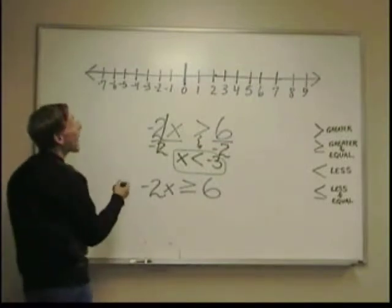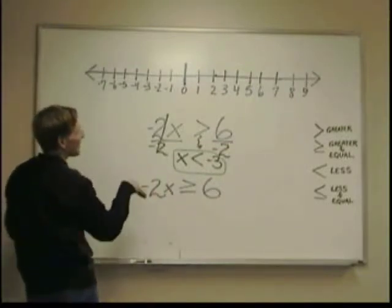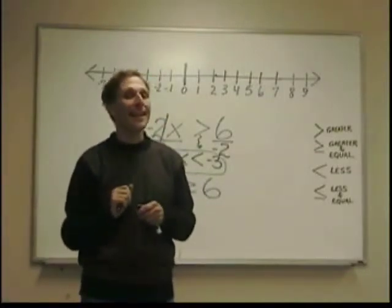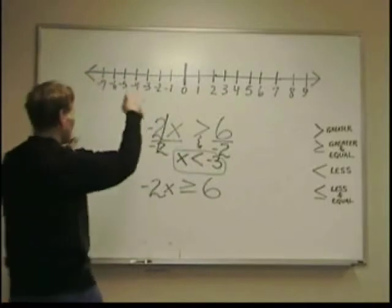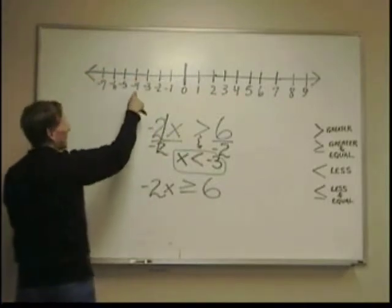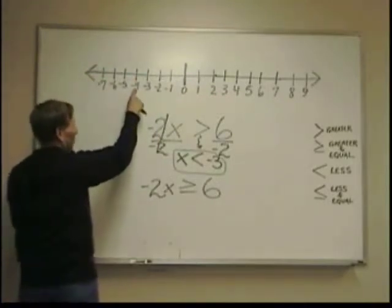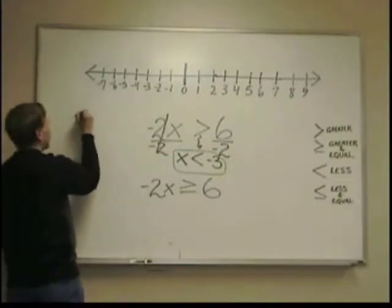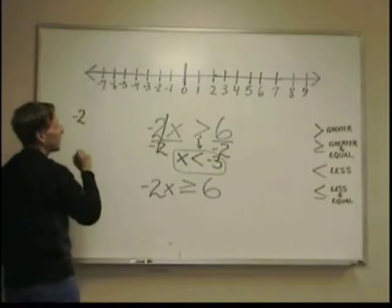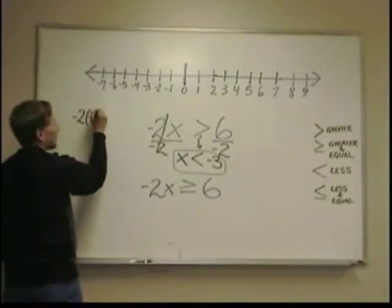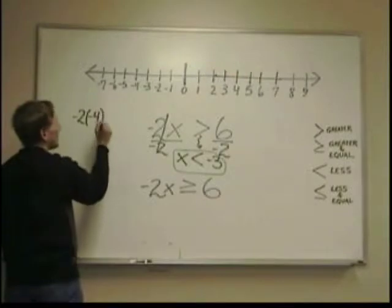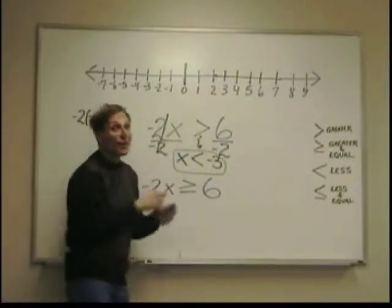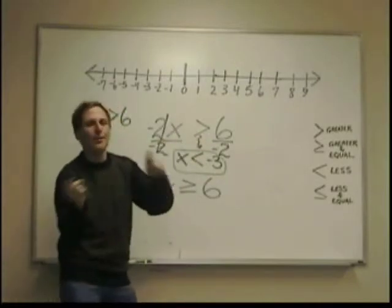So, I'll pick any number that's less than negative 3. What's one less than negative 3? I hope you said negative 4. Remember, when you're in negative, the number looks bigger, but it's actually a smaller number. Negative 4 is one less than negative 3. So, negative 2 times negative 4 is greater than 6. I'm going back to my original inequality before I flipped it.